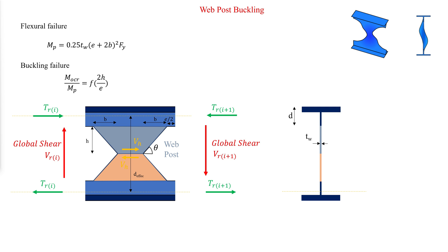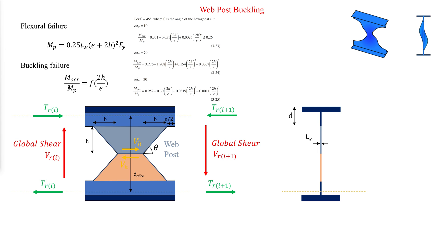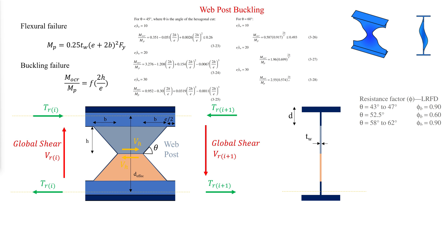One set of equations was developed for theta equal to 45 degrees and another for theta equal to 60 degrees. It is not permissible to use these equations for theta less than 43 degrees or greater than 62 degrees. It is acceptable to design beams with web posts having an angle between 45 and 60 degrees by interpolating between the two equation sets and applying a larger factor of safety to the allowable web post bending moment.